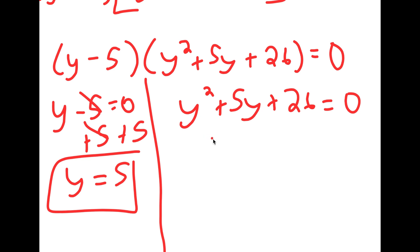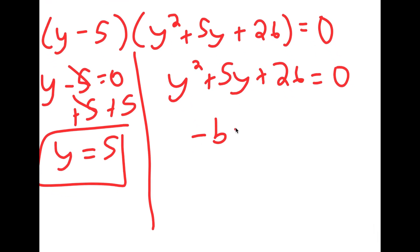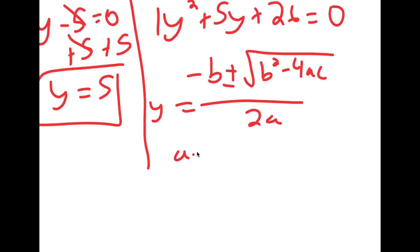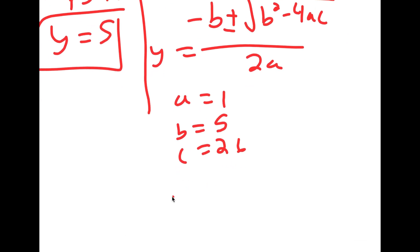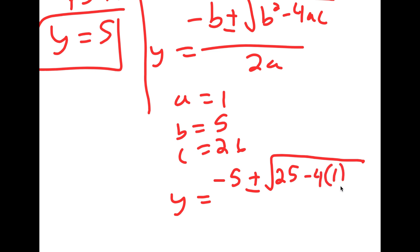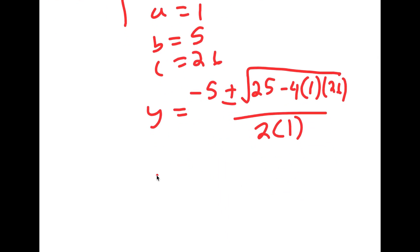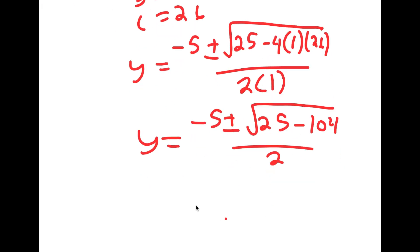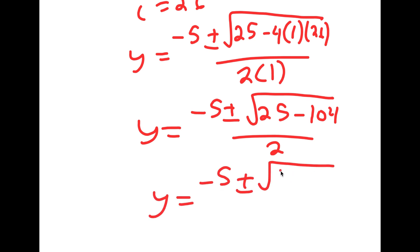Now for y squared plus 5y plus 26 equals 0, I'm going to have to use the quadratic formula, which is negative b plus or minus the square root of b squared minus 4ac over 2a. So in this case, a is 1, b is 5, and c is 26. So I get y is equal to negative 5 plus or minus the square root of 25 minus 4 times 1 times 26, which is 104, all over 2. And this is equal to negative 5 plus or minus the square root of negative 79 over 2. You can't take the square root of a negative number, so this is no solution.